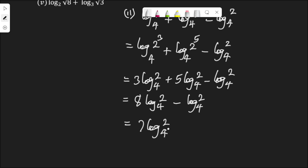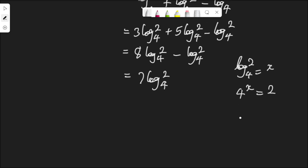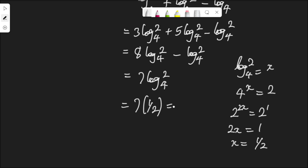8 minus 1 is 7, giving 7 log 2 to base 4. But log 2 to base 4 equals 1/2. To show this: if log 2 to base 4 equals x, then 4 to the power of x equals 2. Expressing as 2 to the power of 2x equals 2 to the power of 1, the bases are the same so we equate the powers: 2x = 1, hence x = 1/2. So log 2 to base 4 is 1/2, meaning 7 multiplied by 1/2 equals 3.5, or 3 and a half. That's the answer for question 2.